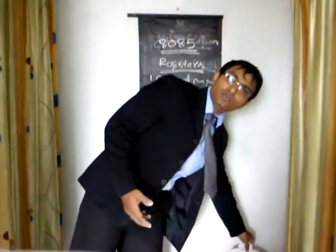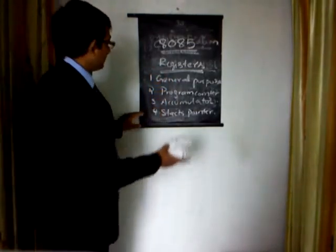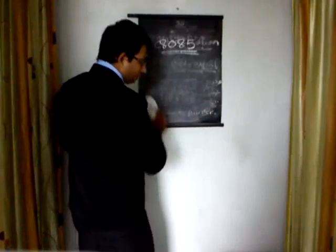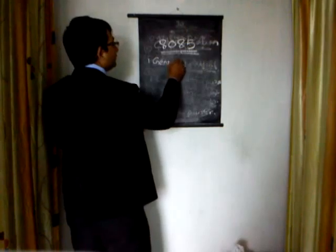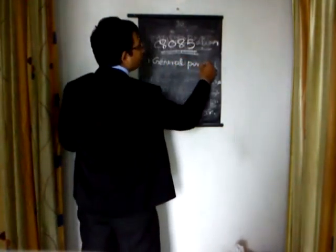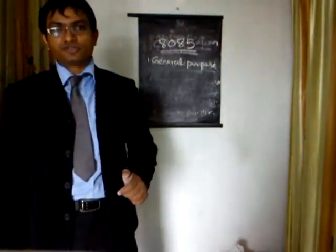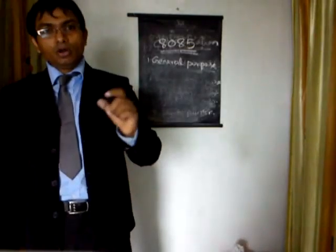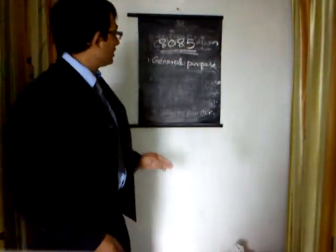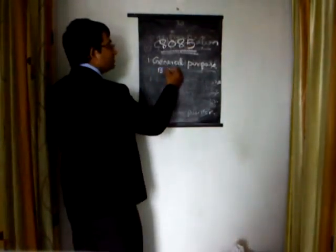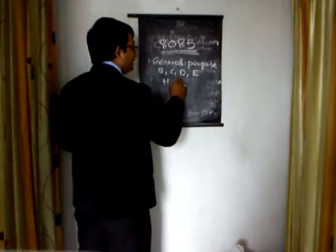Let me explain each and every register individually. First, about the general purpose register. There are six general purpose registers present in 8085. All of these registers are 8-bit registers. The registers present in 8085 are B, C, D, E, H, and L.